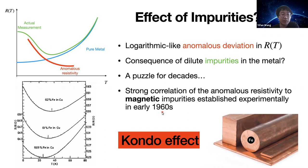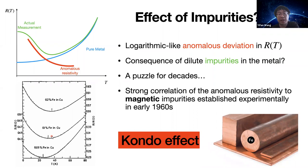It was not until the 1960s that experimentally a strong correlation was established between the presence of magnetic impurities and this anomalous resistivity. For example, in the case of copper doped with iron impurities, which carry non-trivial magnetic moments, the dip in the resistivity in the low temperature regime was observed to depend on the concentration of the iron impurities. This kind of effect is known as the Kondo effect.